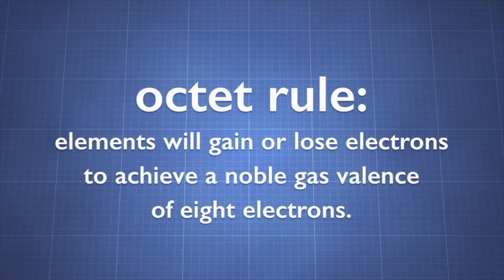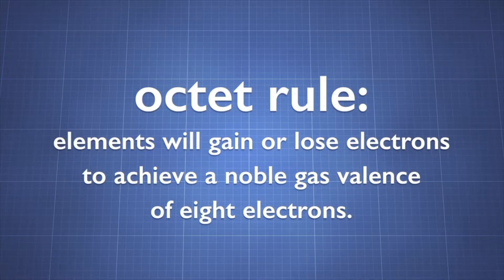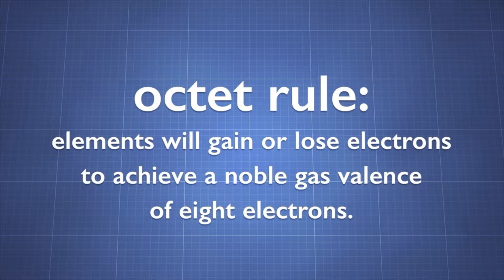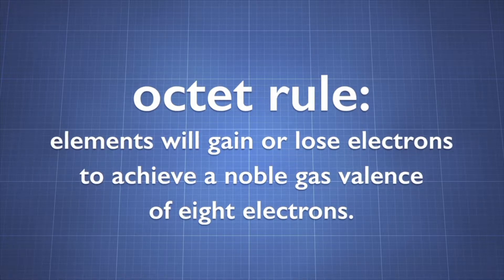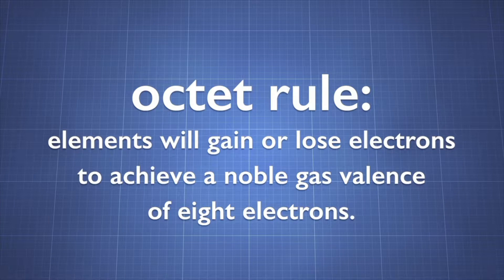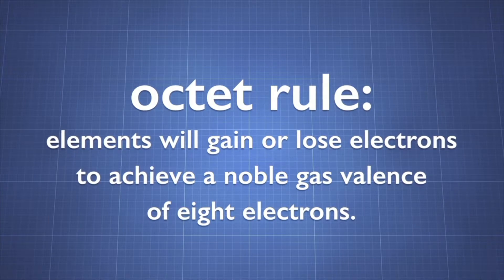The octet rule states that elements will gain or lose electrons to achieve a noble gas valence of 8 electrons. Elements will react so that they lose or gain the fewest number of electrons to have a noble gas configuration, requiring the least energy.